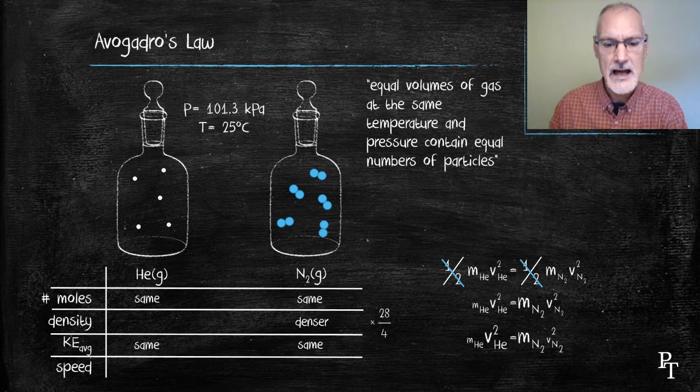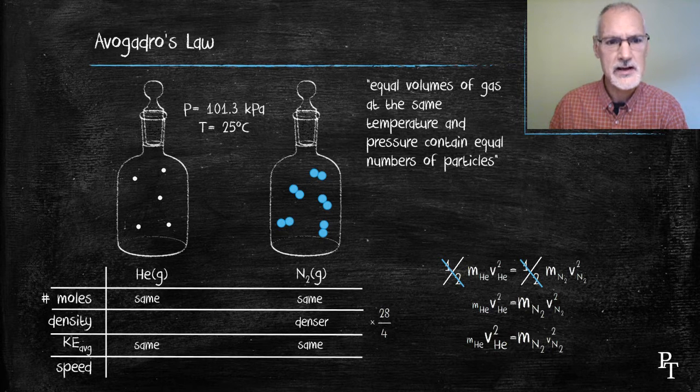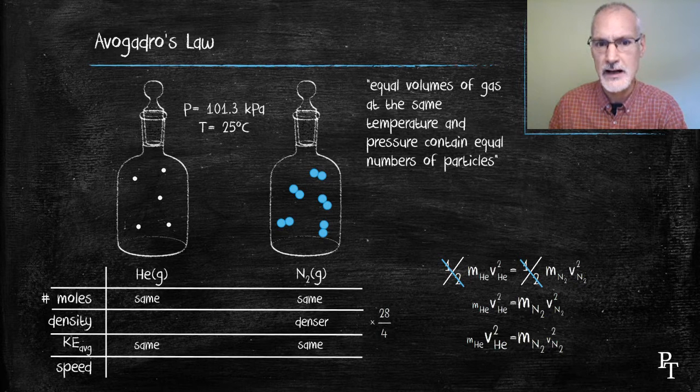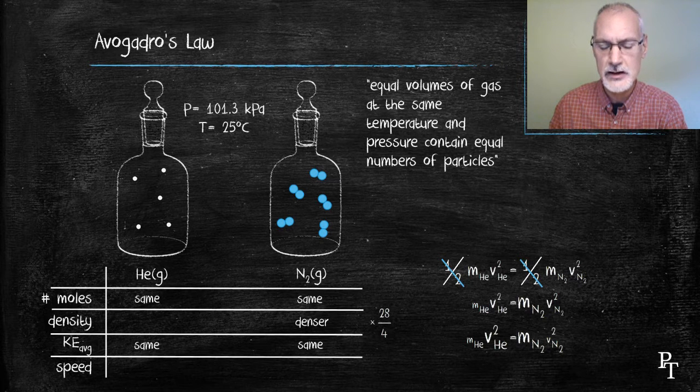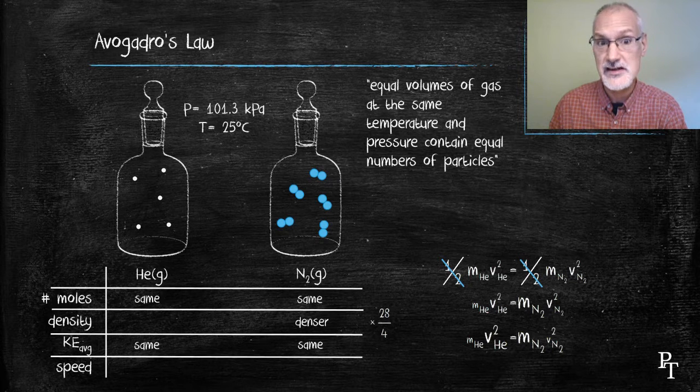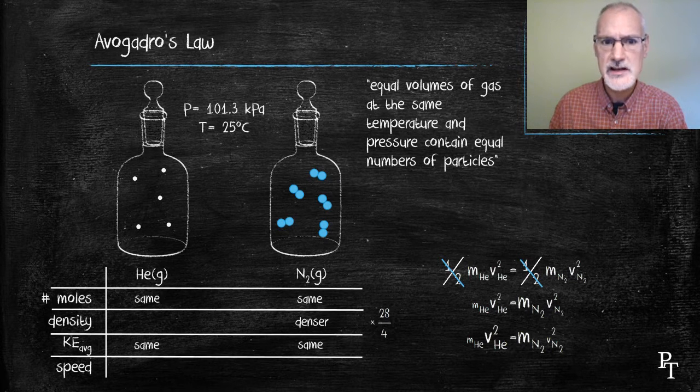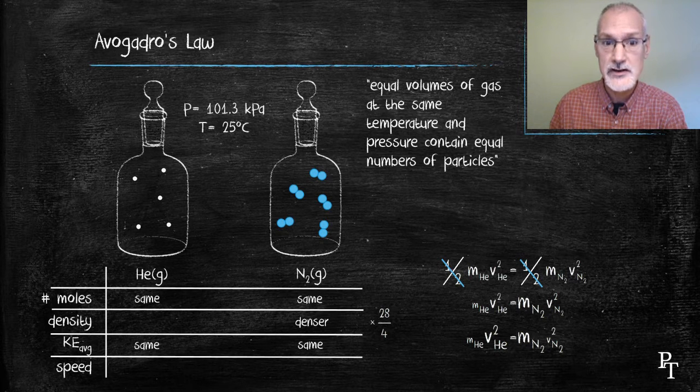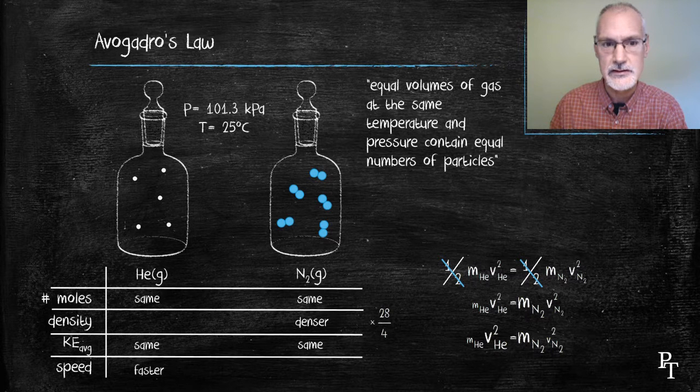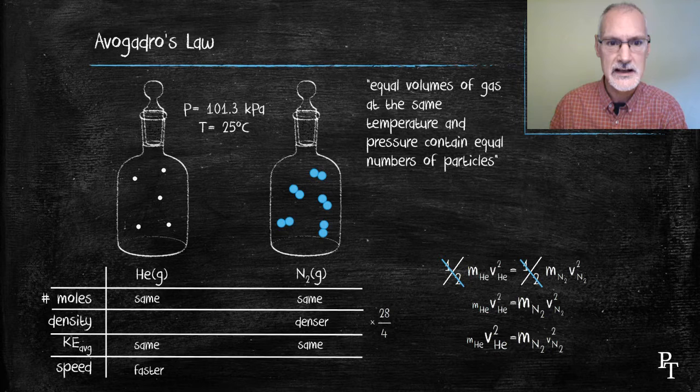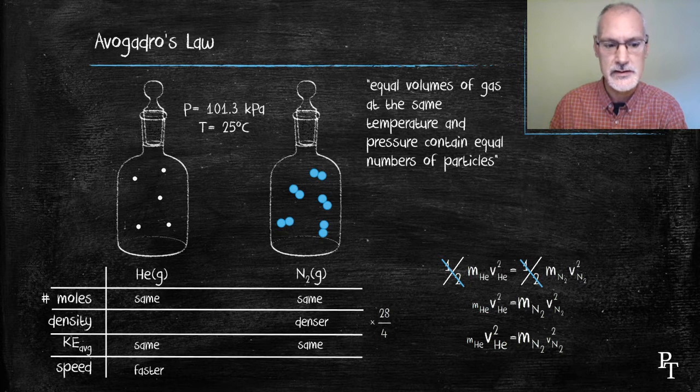In the second line you'll notice I made the mass of helium small. That's because its relative molar mass is smaller than the relative molar mass of nitrogen which I've made larger. So the left-hand side has a small mass and the right-hand side has a large mass but these two quantities must equal each other. That could only be accomplished if the velocity of helium was much greater than the velocity of nitrogen. So the particles would be moving faster over in the helium container than in the nitrogen container.